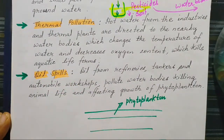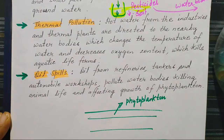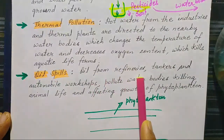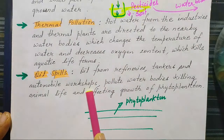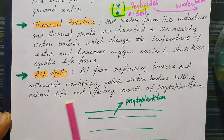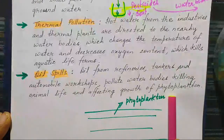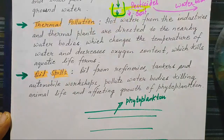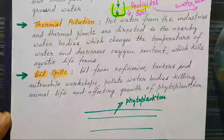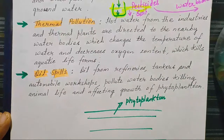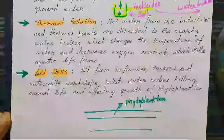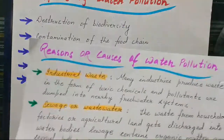Oil spills — seepage of oil into water from oil refineries, tankers, and automobile workshops — pollute water bodies, killing animal life and affecting the growth of phytoplanktons, which are aquatic plants that go through the process of photosynthesis.